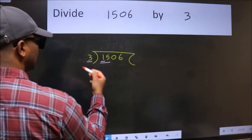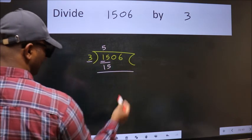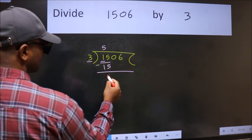When do we get 15 in 3 table? 3 fives, 15. Now we should subtract. We get 0.